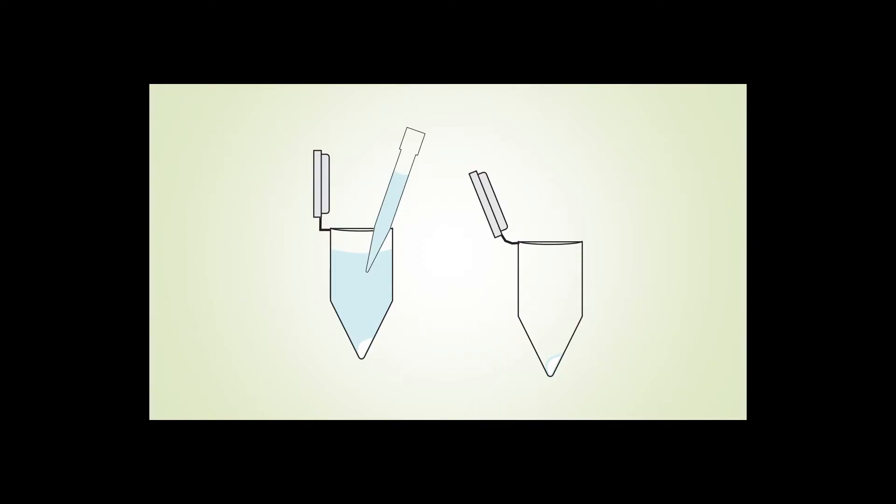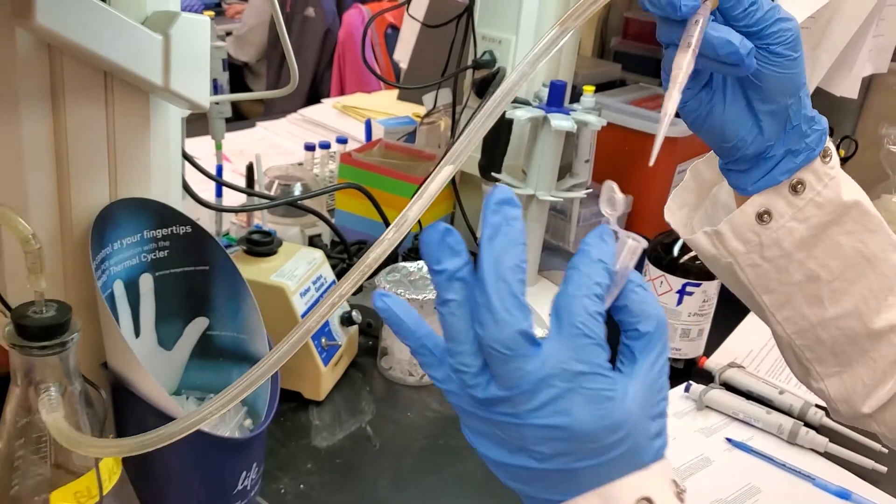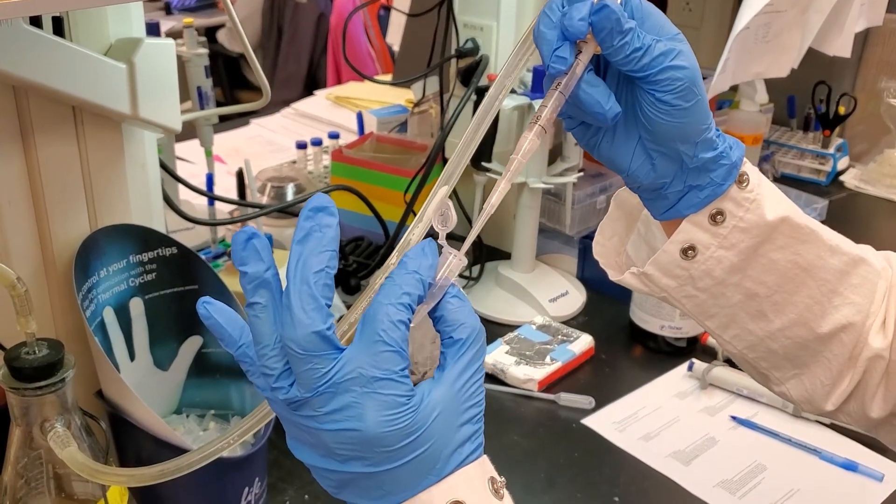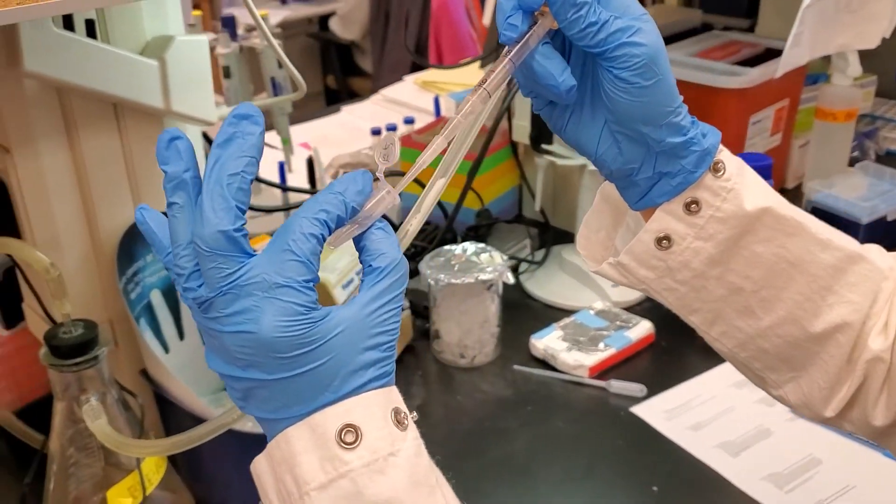The RNA pellet should be affixed solidly to the bottom of the tube. Make sure to be careful and not poke it with your pipette. Here we've attached a tube to a vacuum line to really quickly remove the supernatant from the RNA pellet.